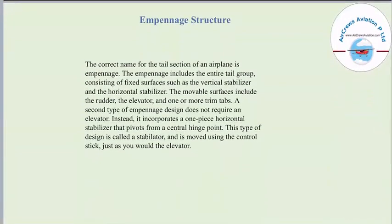The correct name for the tail section is the empennage. It includes the entire tail group consisting of fixed surfaces such as the vertical stabilizer and horizontal stabilizer, and movable surfaces including the rudder, elevator, and one or more trim tabs. A second type of empennage design uses a one-piece horizontal stabilizer that pivots from a central hinge point — this is called a stabilator — and is moved using the control stick just as you would the elevator.